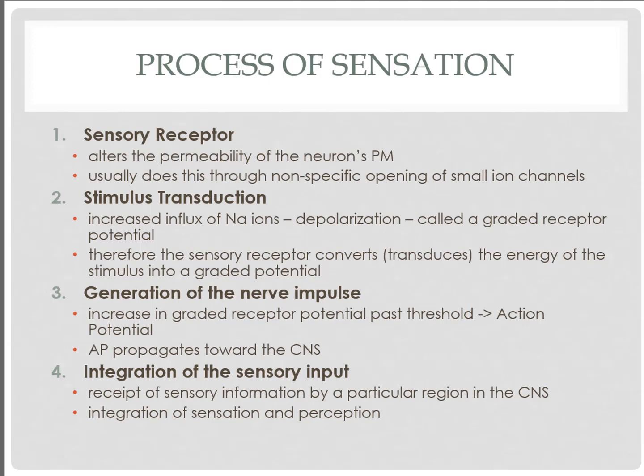That movement of ions — whether depolarization or hyperpolarization — results in the receptor converting that energy into a graded potential. That graded potential can result in generation of a nerve impulse, because graded potentials generated at dendrites that make their way to the axon hillock can result in an action potential if we exceed threshold. Whether an action potential fires or not is inherently dependent on the amount of graded polarizations reaching threshold.